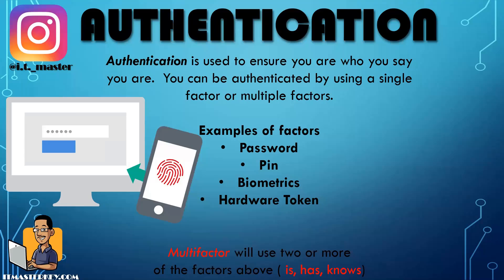Another factor can be a hardware token — so a hardware token can be an ID badge or an access badge. When talking about authentication, just understand the three categories: something the user is, something a user has, or something a user knows. A password is something you know, a fingerprint is something you are, and an ID badge or access badge is something you have.